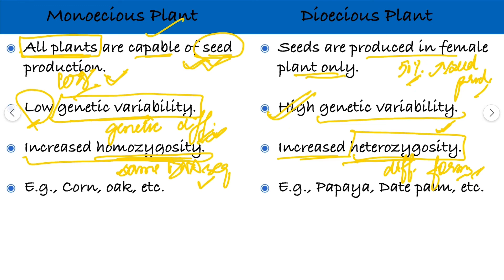Examples of monoecious plants are corn and oak. Examples of dioecious plants are papaya, date, and palm.